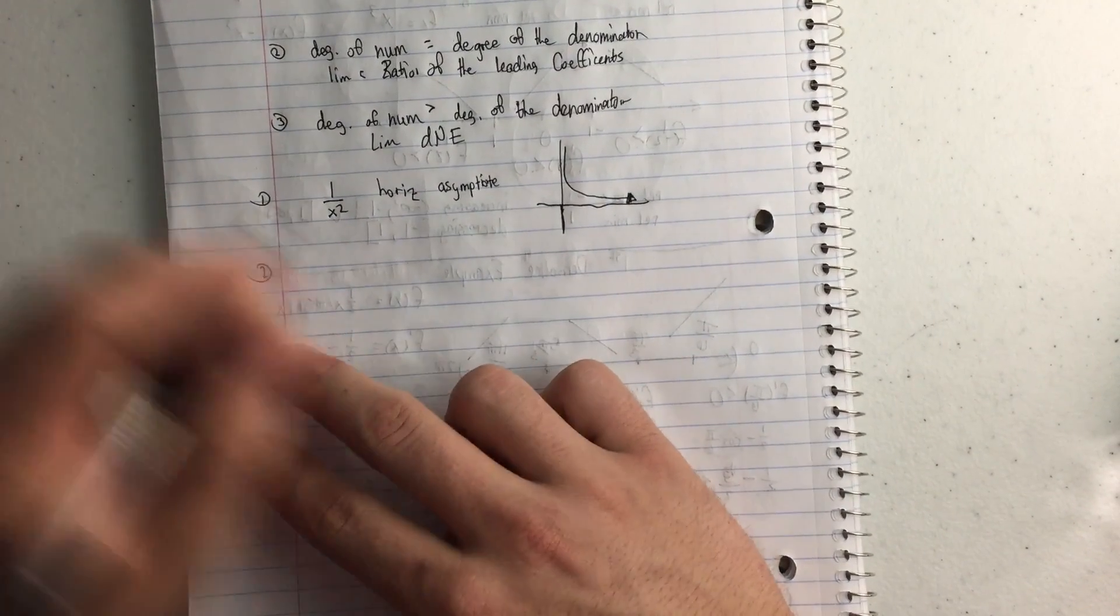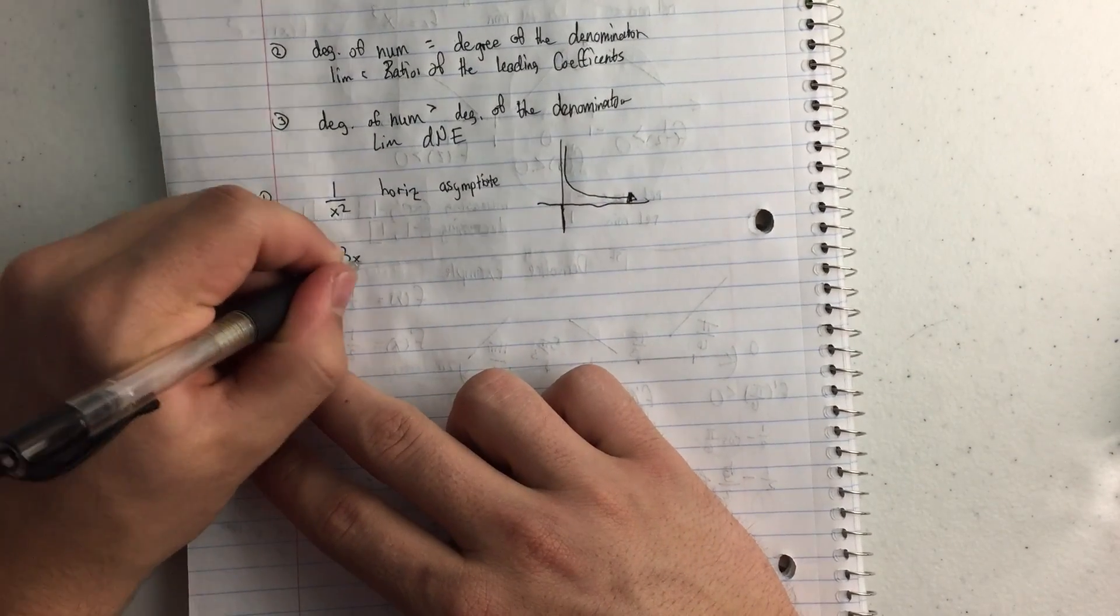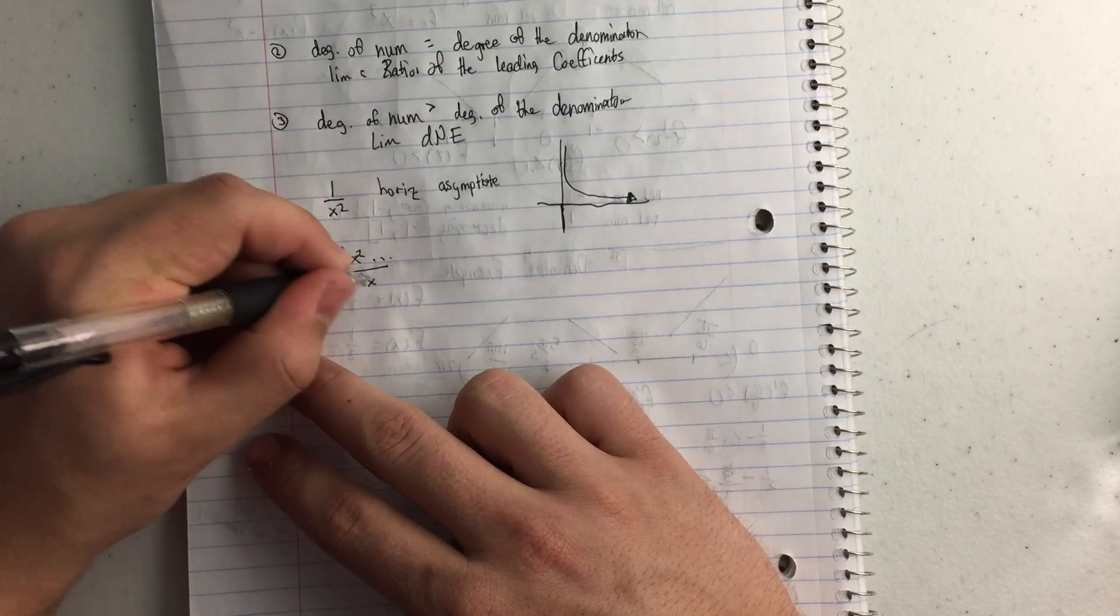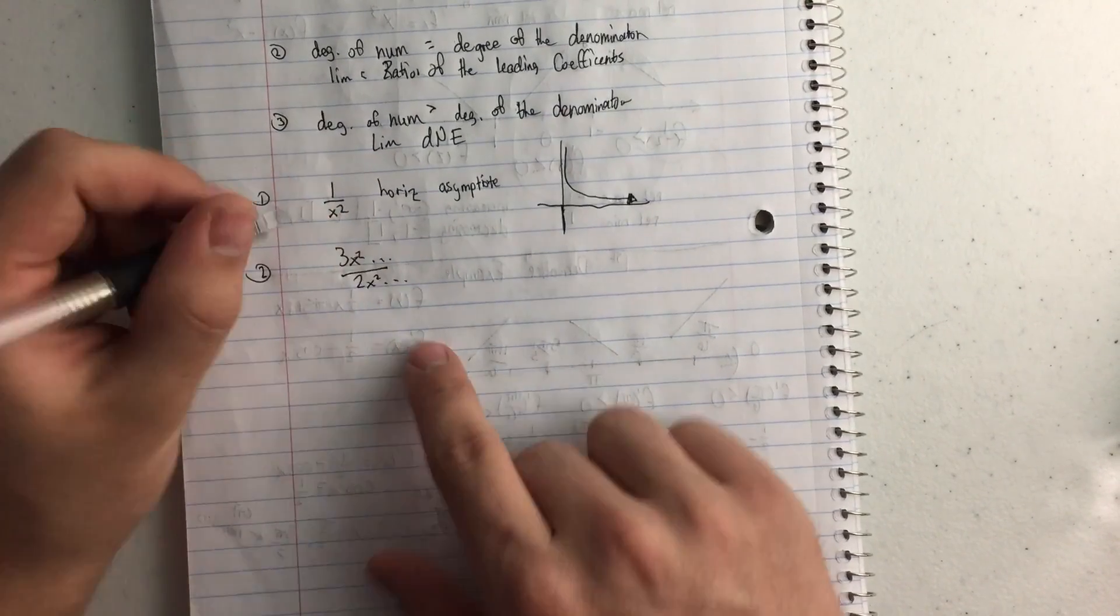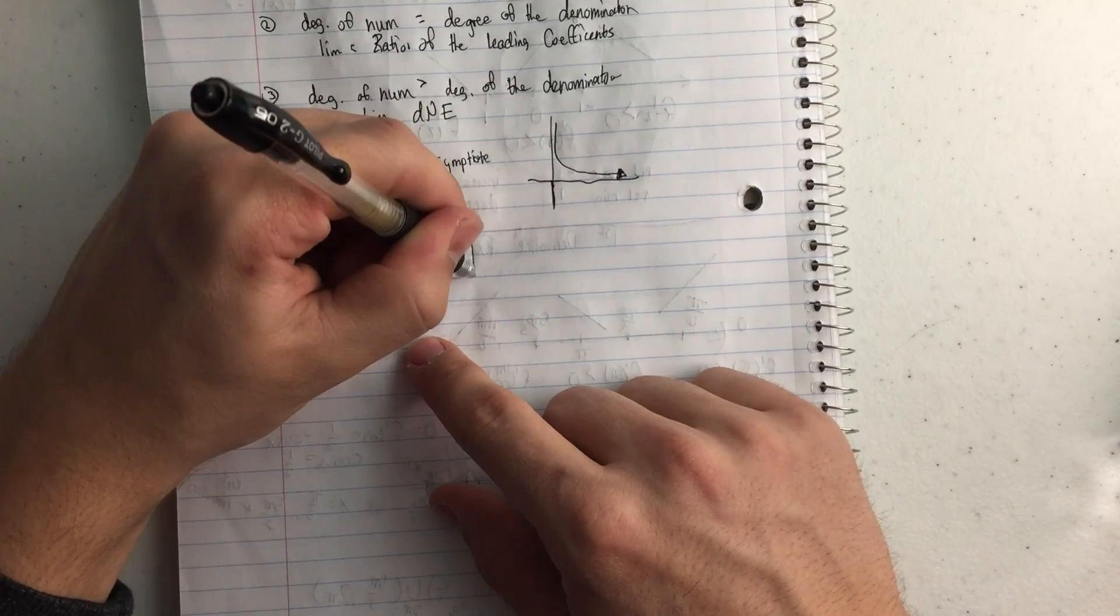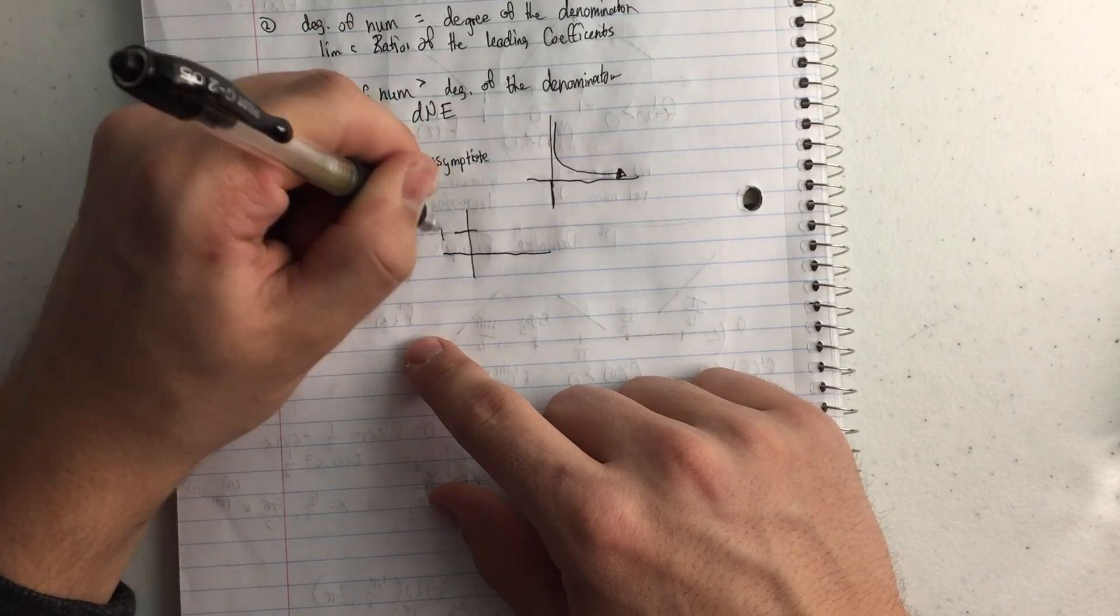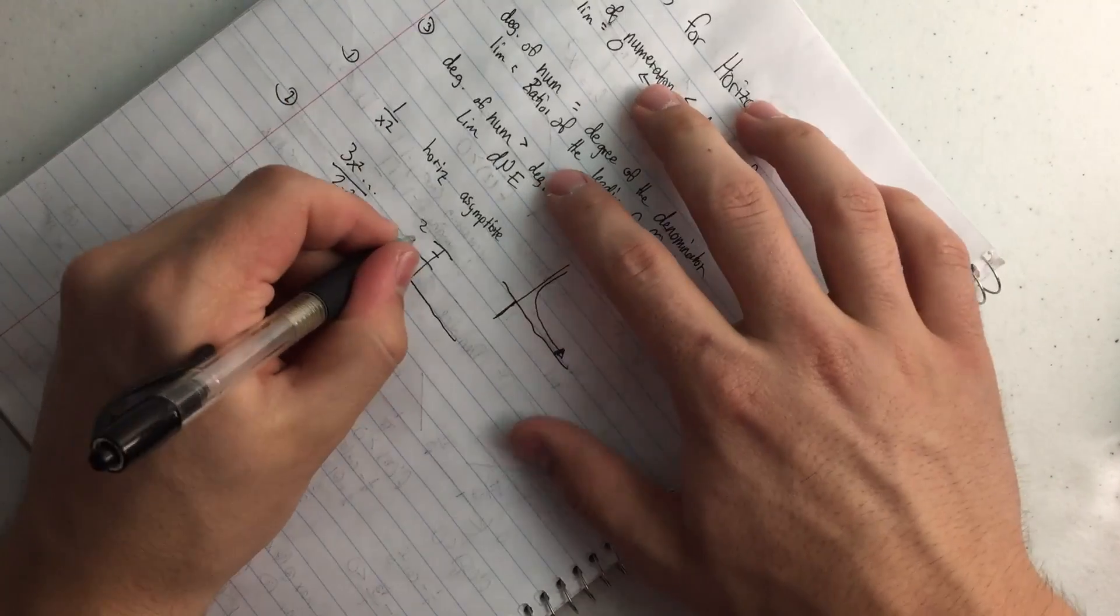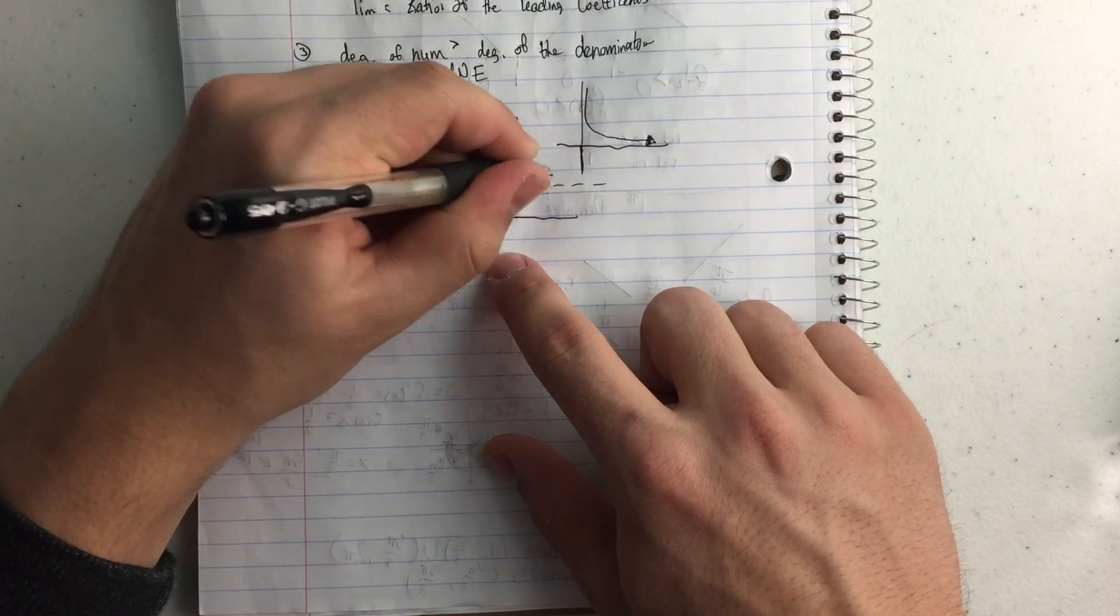Rule number two, the degrees match. So if I have 3x squared and some other things over 2x squared and other things in my equation, then I know that if this is one and that's two at three and a half, which would be right there, that's where my horizontal asymptote's going to be, and so it could go something like that.